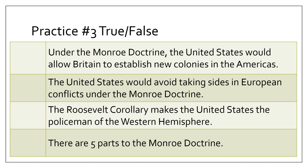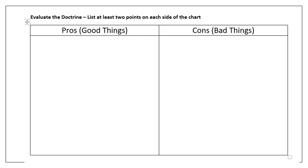Practice number three: read the following statements, mark them as true or false, and if they're false, use the space provided to correct them. After finishing that practice, you'll find a chart in your worksheet to evaluate the Monroe Doctrine — on one side, list the pros, the good things about it from the US perspective or from other countries' perspectives; on the other side, list the cons. Try to come up with at least two each, though you could easily list ten apiece — and bring those to class for discussion. This concludes our video lecture on the Monroe Doctrine. Thank you for listening!